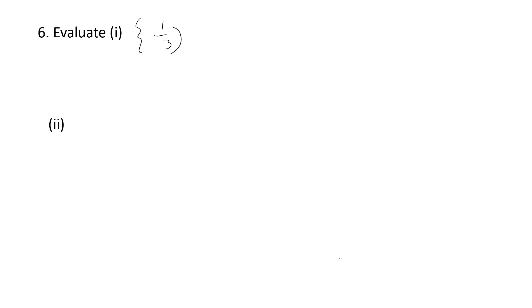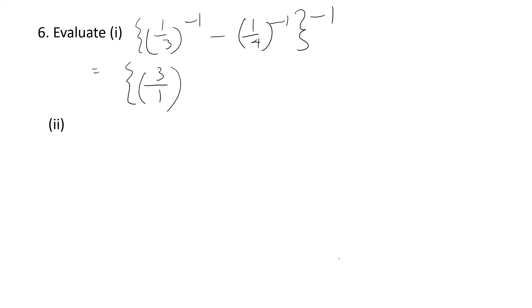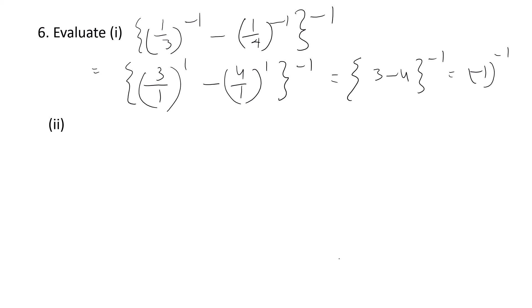Next question: evaluate (1 by 3 raised to minus 1 minus 1 by 4 raised to minus 1) whole raised to minus 1. First simplify inside the bracket: 1 by 3 raised to minus 1 is 3, and 1 by 4 raised to minus 1 is 4. So inside the bracket we have 3 minus 4, which is minus 1. Then (minus 1) raised to minus 1 is 1 by (minus 1), which equals minus 1.